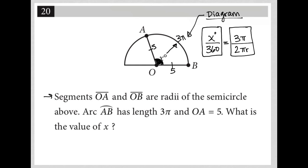So how do I find the answer to this? Well, I know that r is equal to 5. I was provided with that information. So this becomes x over 360 equals 3π over 2πr. R is 5. So 2π times 5 would be 10π.